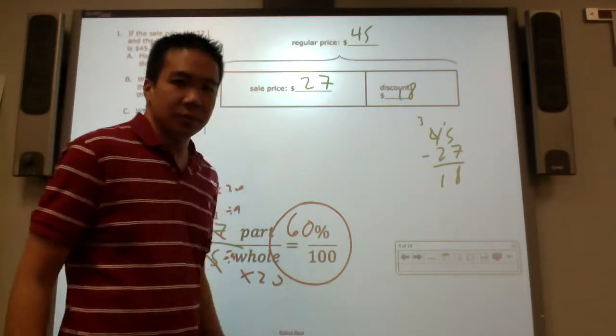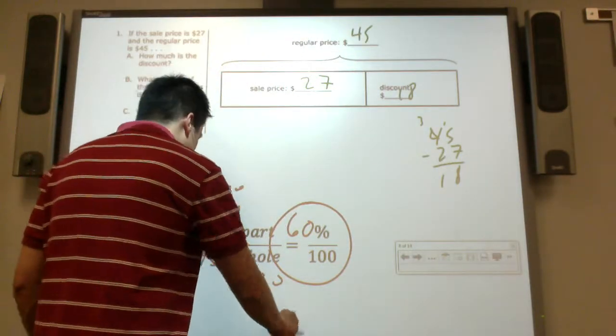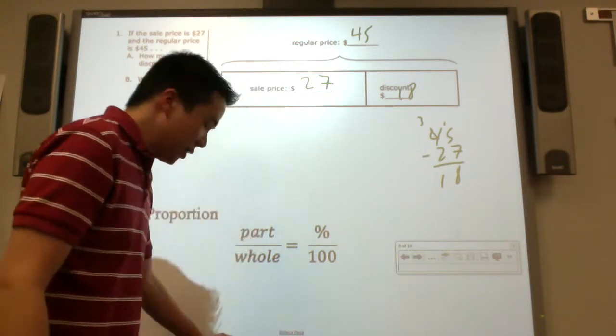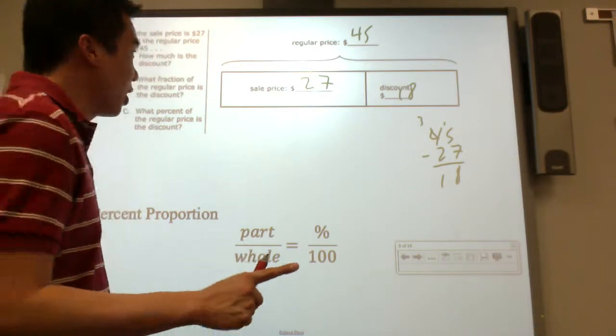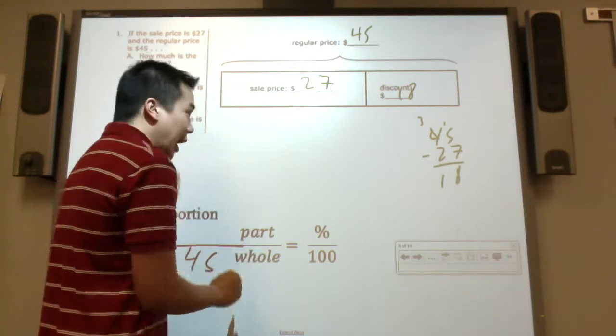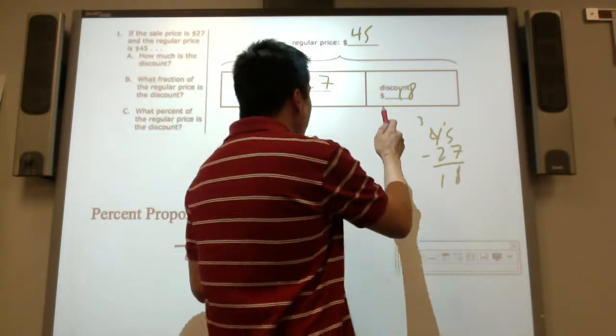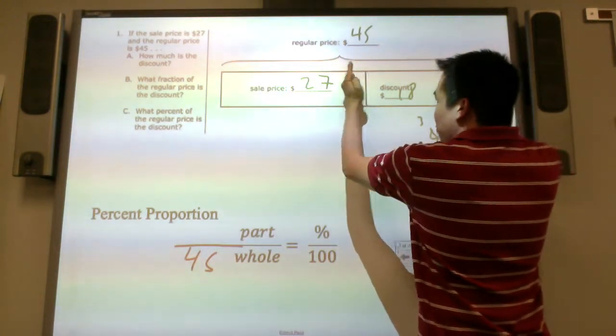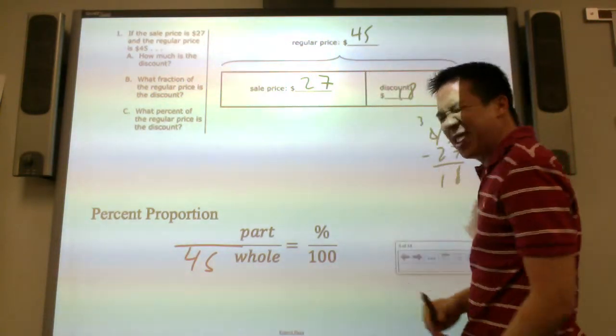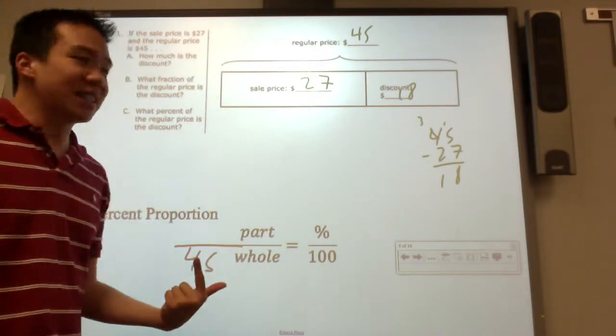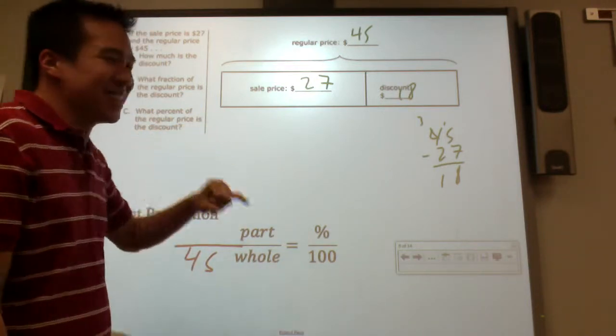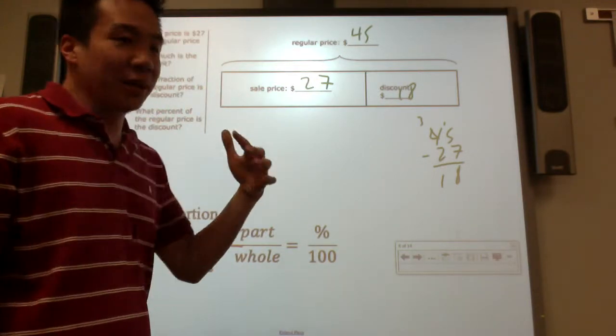Stop, stop. It's not correct. I did not read this correctly. This is what happens when you try to do this on a first video. Let's go back. The regular price is $45. I knew it's not correct. I knew it's not going to be 60%. Because if you look at the picture, is this discount more than half or less than half? I used the wrong number on this one. I could see this one is less. So I knew something was wrong here.